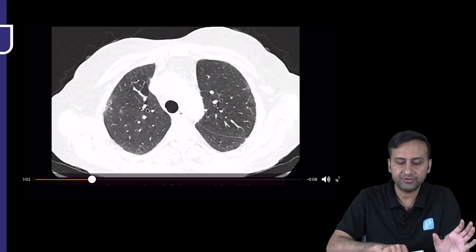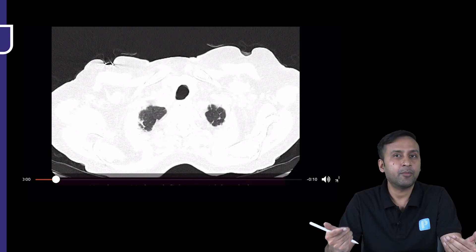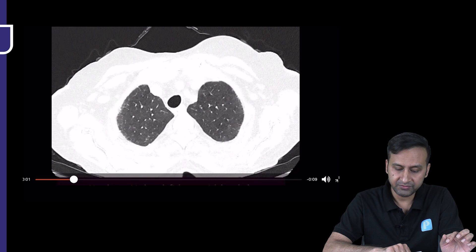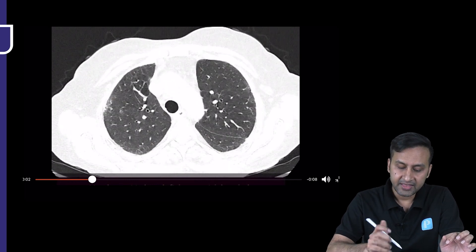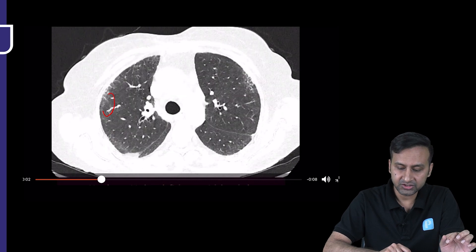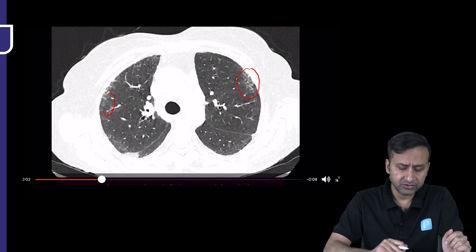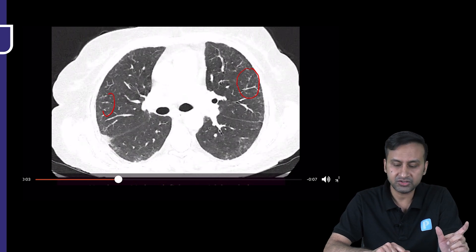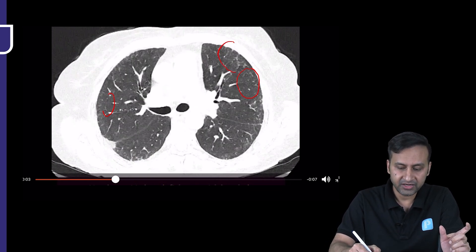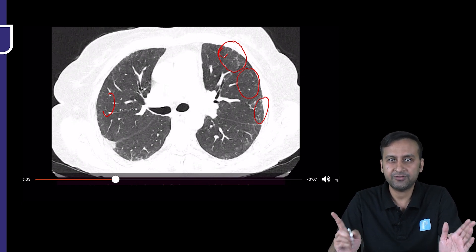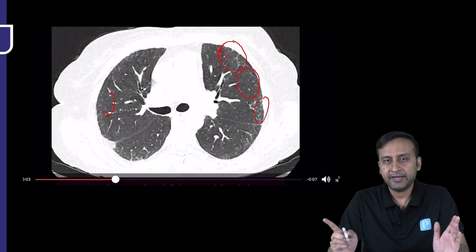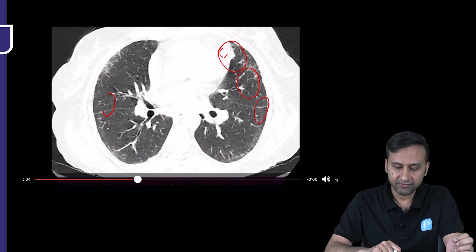The second important question is what are the findings and what is the predominant pattern? Starting from the lung apices, we can see peripheral-based reticulations — an increased number of lines along the peripheral aspects of bilateral lung fields. We are dealing with a reticular pattern. There are no nodules or dots. The reticular pattern is very well seen — there is interlobular septal thickening and a peripheral fine mesh-like network representing intralobular septal thickening.